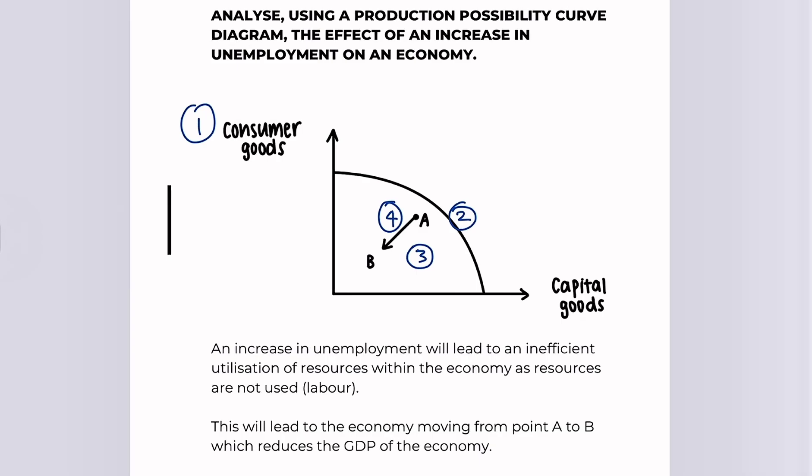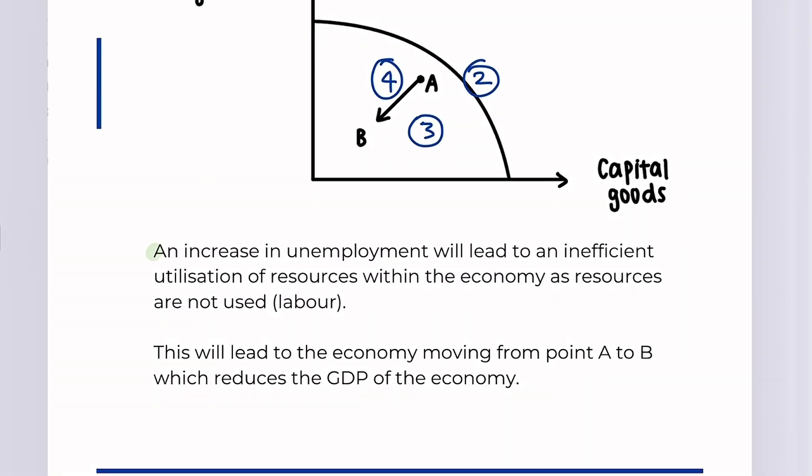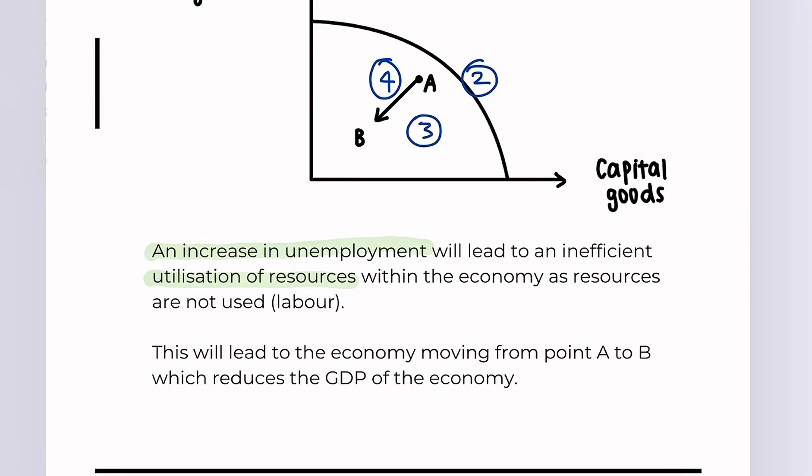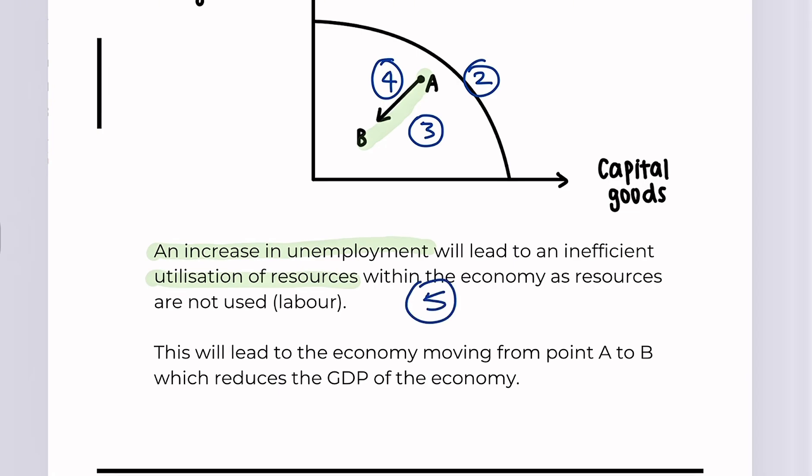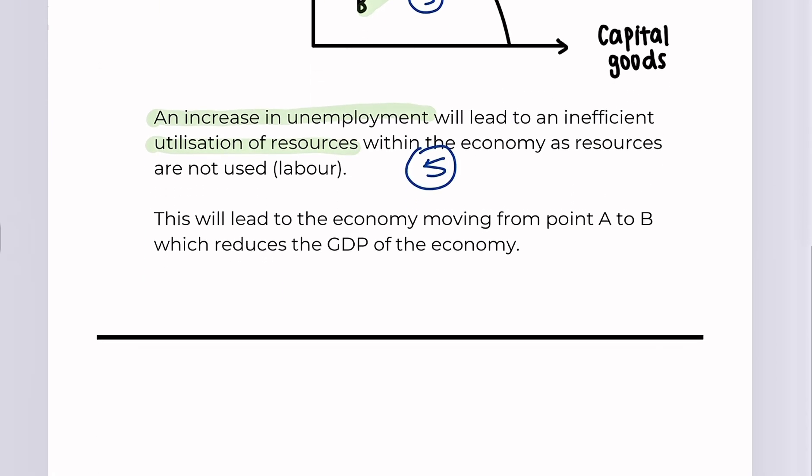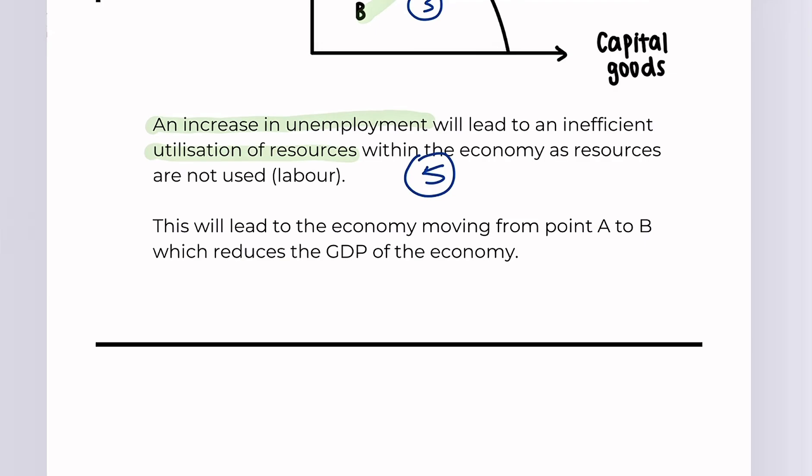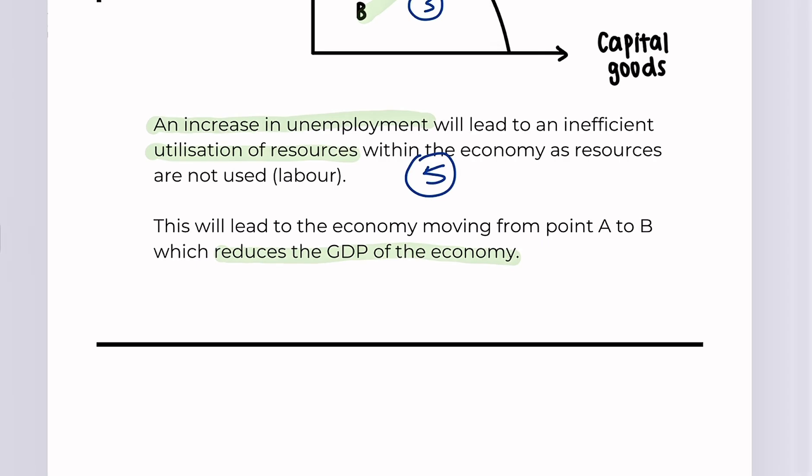Now what I like doing is briefly repeating the question. So it says the effect of an increase of unemployment in an economy. So what I have written here is an increase in unemployment will lead to inefficient utilisation of resources within the economy as resources are not used. This is due to unemployment, so that is our reason, which gets us our fifth mark. And for our final mark, we need to talk about the effect. And the effect of this is that it reduces the GDP of the economy. And this will get us our sixth and final mark.